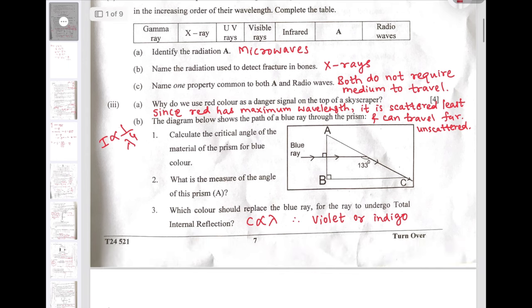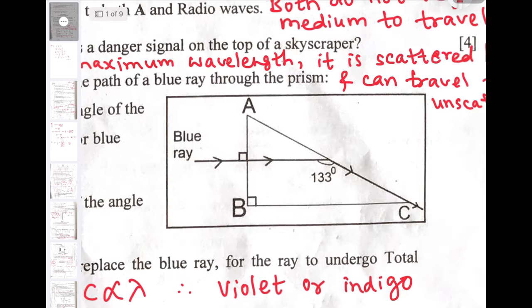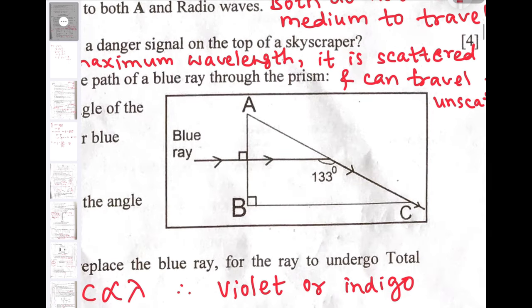Next, the diagram shows the path of blue ray through a prism. Calculate the critical angle of the material of the prism. To identify the critical angle, we can draw the normal on surface AC and this angle becomes 90. So this angle will be critical angle, that is 133 minus 90 will give us 43. So critical angle here is 43 degree.